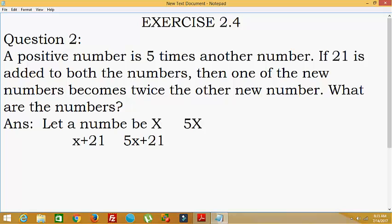Then one of the new numbers becomes twice the other new number. That is, one of the numbers like this: 2 times (x plus 21), this will be equal to this one, this number 5x plus 21. This is one of the number will be twice the other number, like this we can write.